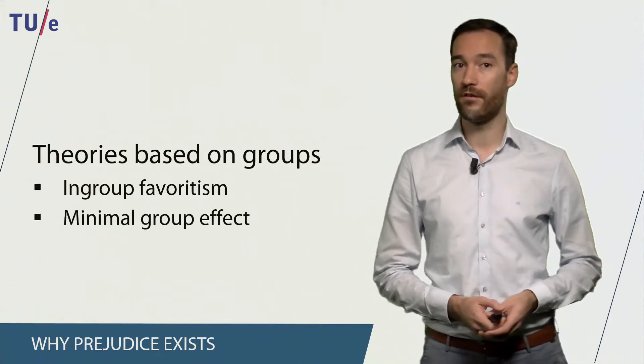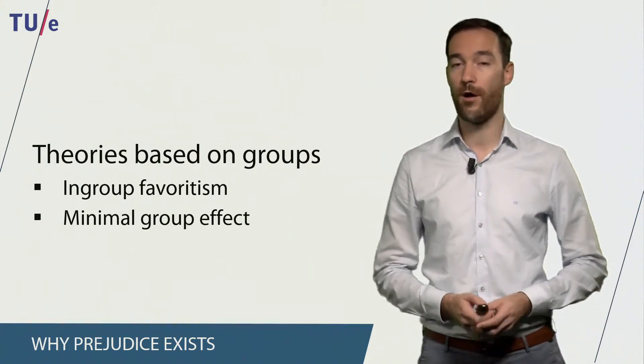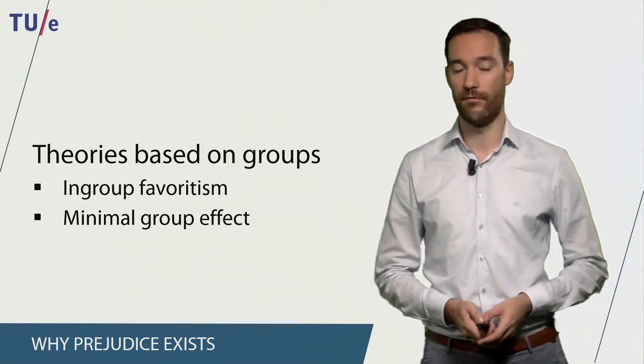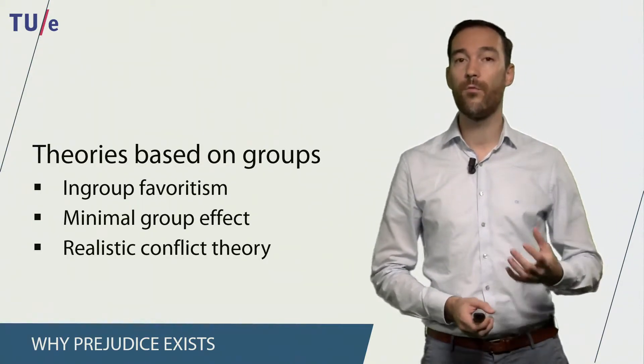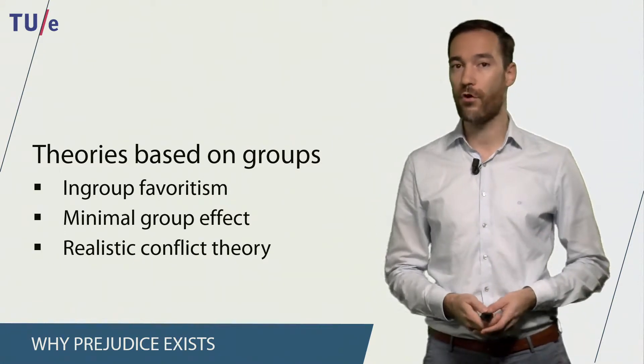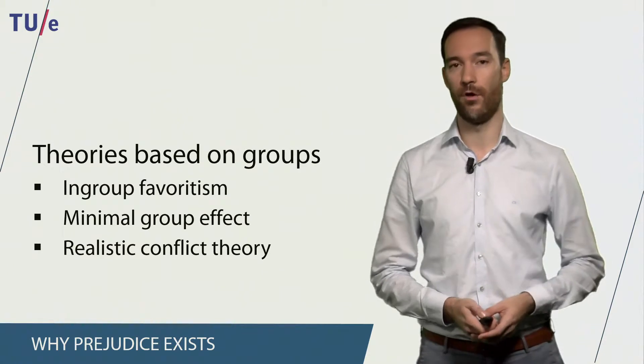A special case of this is the minimal group effect. This means that in-group favoritism already happens when group membership is assigned randomly. Realistic conflict theory means that when we are fighting or competing for scarce resources, we are more likely to be prejudiced against people of different groups.